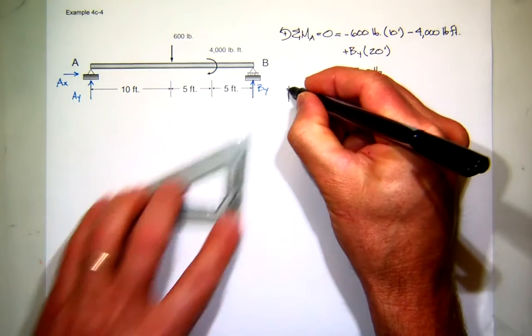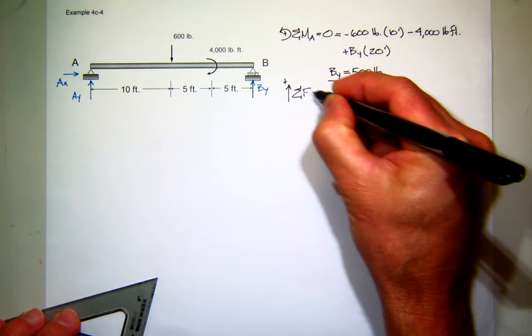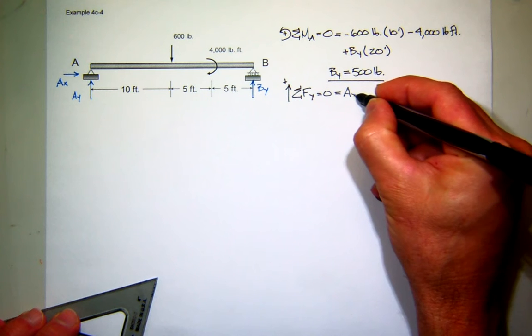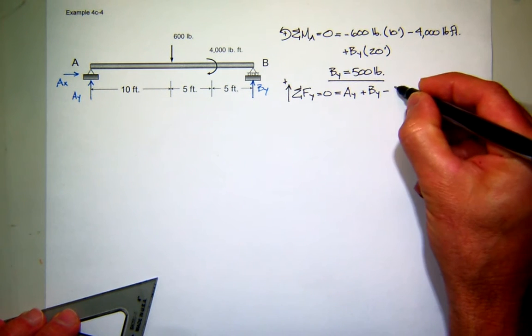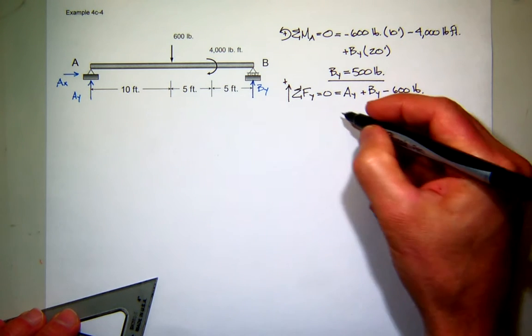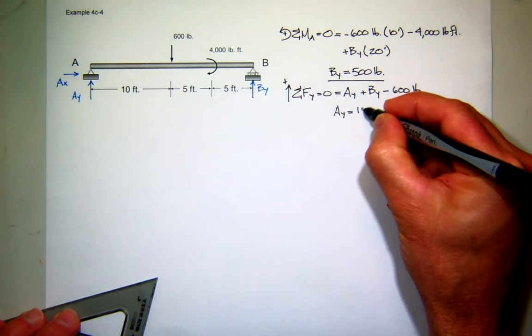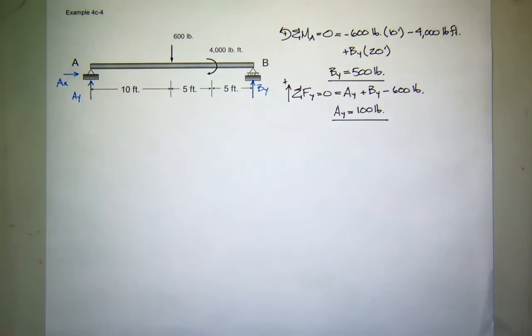So then we can sum forces in the Y direction and find our remaining unknown, A_Y. So we have A_Y acting up, B_Y also acts up, and then we have 600 pounds acting down. So it looks like A_Y is 100 pounds.